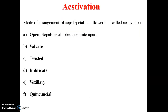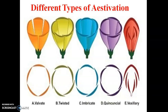Aestivation refers to the arrangement of sepals and petals in a flower bud. There are different types of aestivation: Valvate, Twisted, Imbricate, Vexillary, and Quincuncial. These are the different types we will discuss.